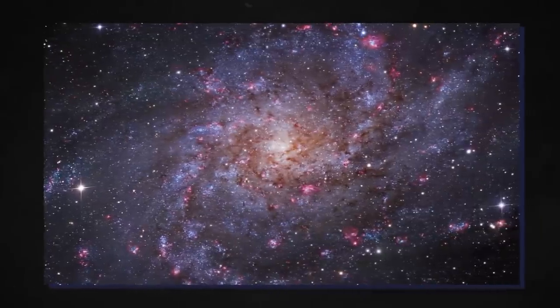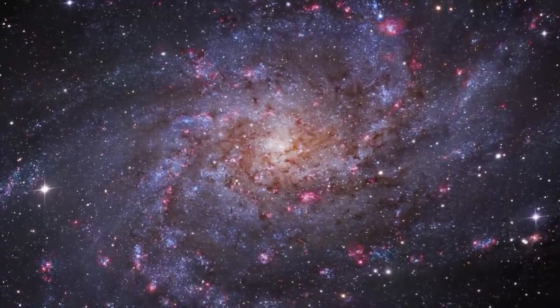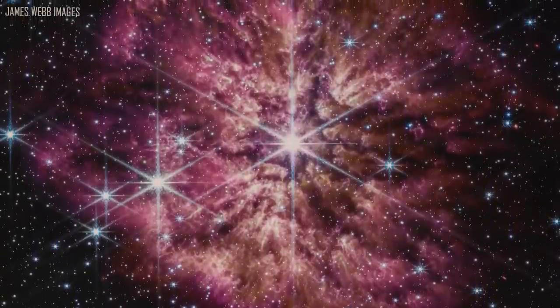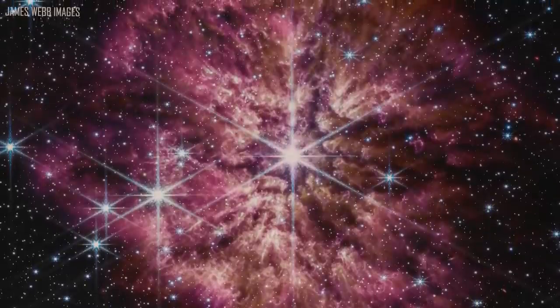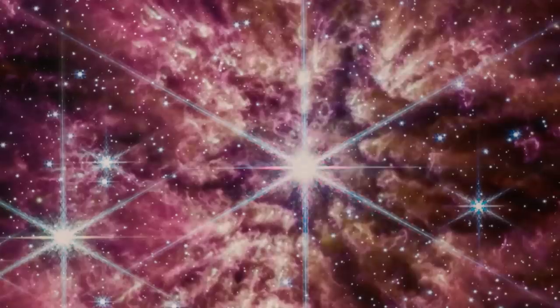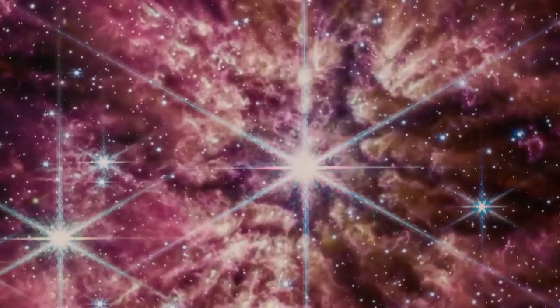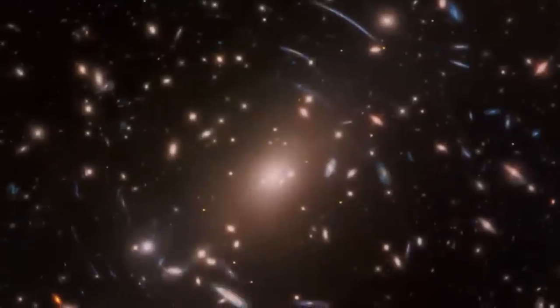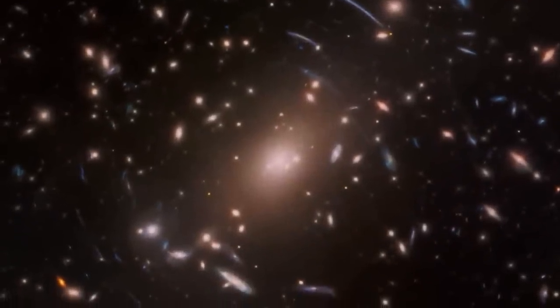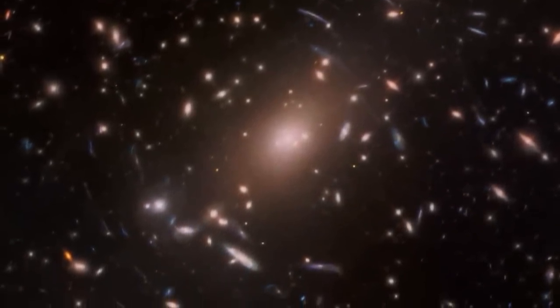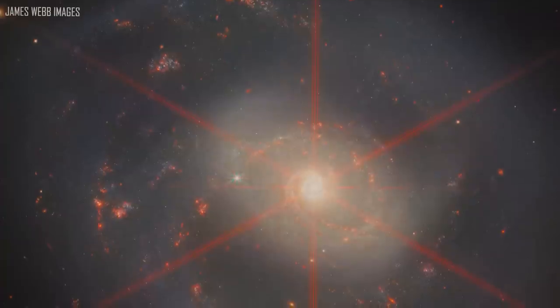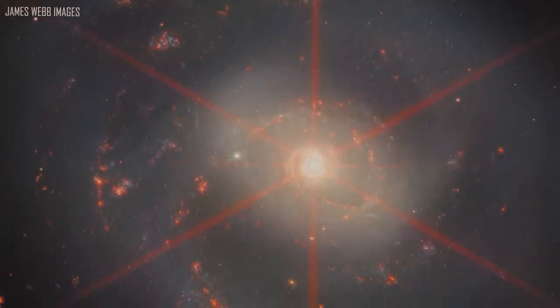The galaxies appeared as sizeable points of light, and the team was stunned to see them. The amount of mass discovered means that the known mass in stars at this period of our universe is up to 100 times greater than thought before. These objects are way more massive than anyone expected, said Joel Leja, assistant professor of astronomy and astrophysics at Penn State University. We expected only to find tiny, young baby galaxies at this point in time, but we've discovered galaxies as mature as our own in what was previously understood to be the dawn of the universe.